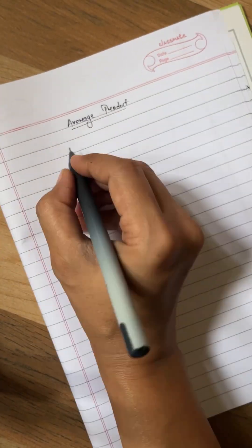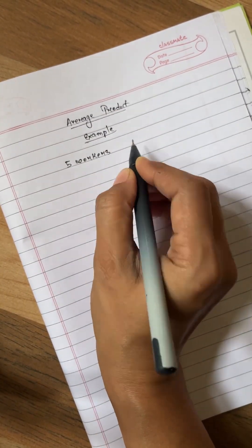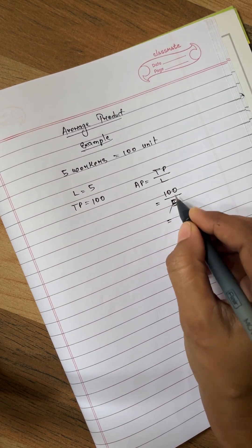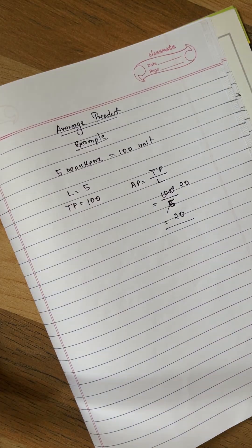Average product example: if 5 workers are producing total 100 units then labor is 5, total product is 100 and AP is calculated as TP by L. After putting the values 100 upon 5 we will get 20 units.